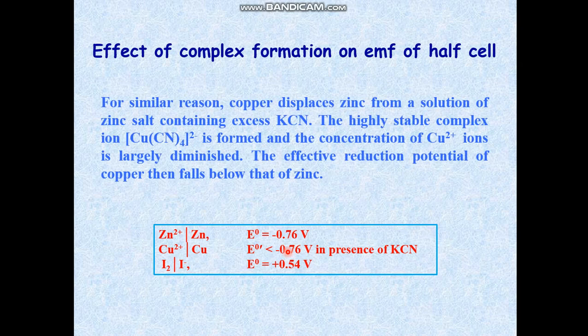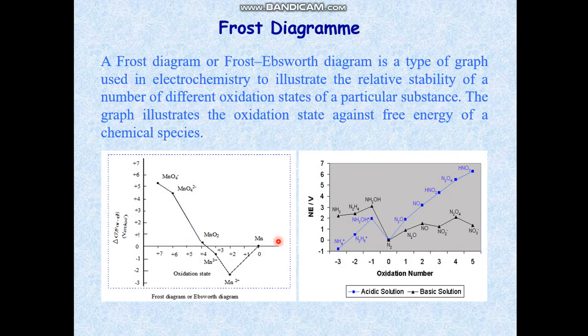So copper displaces zinc from a solution of zinc salt containing excess potassium cyanide. What is the role of this potassium cyanide? It helps in formation of copper complex [Cu(CN)₄]²⁻. This complex is formed and the formal potential of the Cu²⁺/Cu system decreases and it becomes much more negative than that of zinc. So that's all about complex formation.